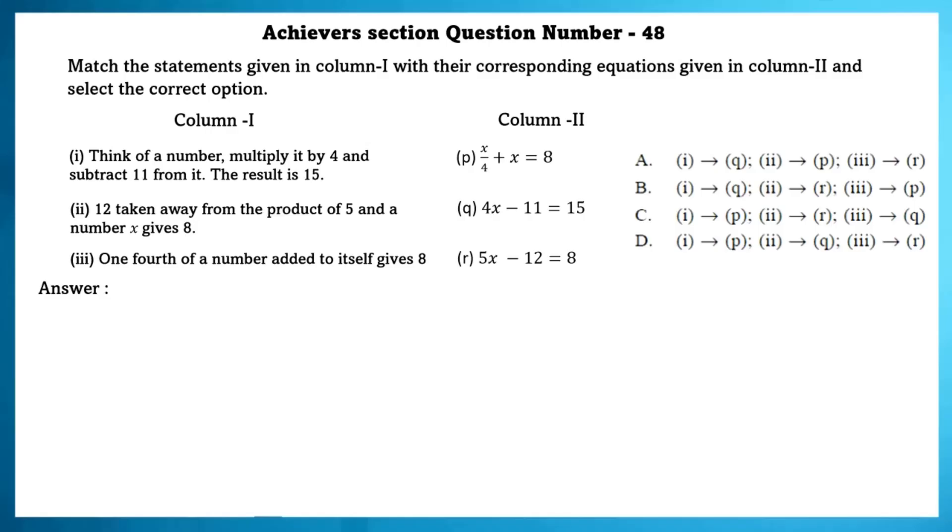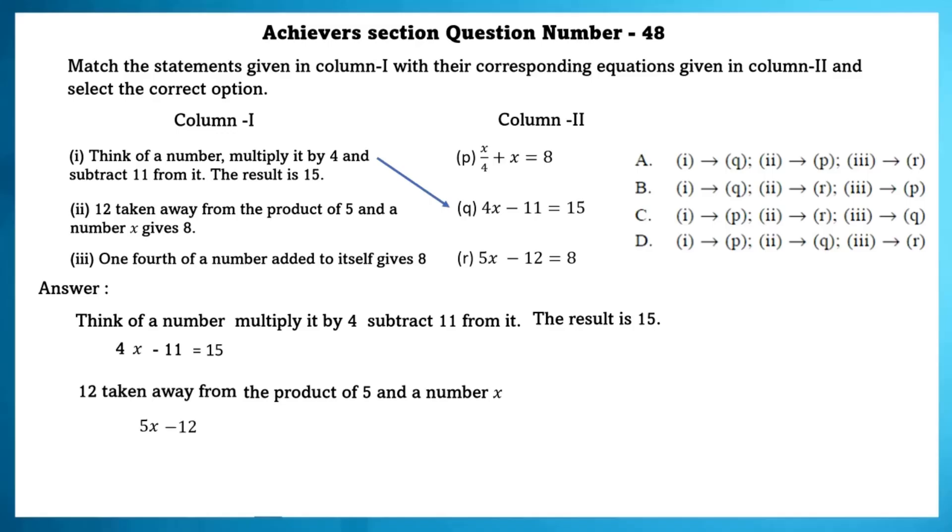Achieve section question number 48. Match the statements given in column 1 with their corresponding equations given in column 2 and select the correct option. Think of a number, multiply it by 4 and subtract 11 from it. The result is equal to 15.